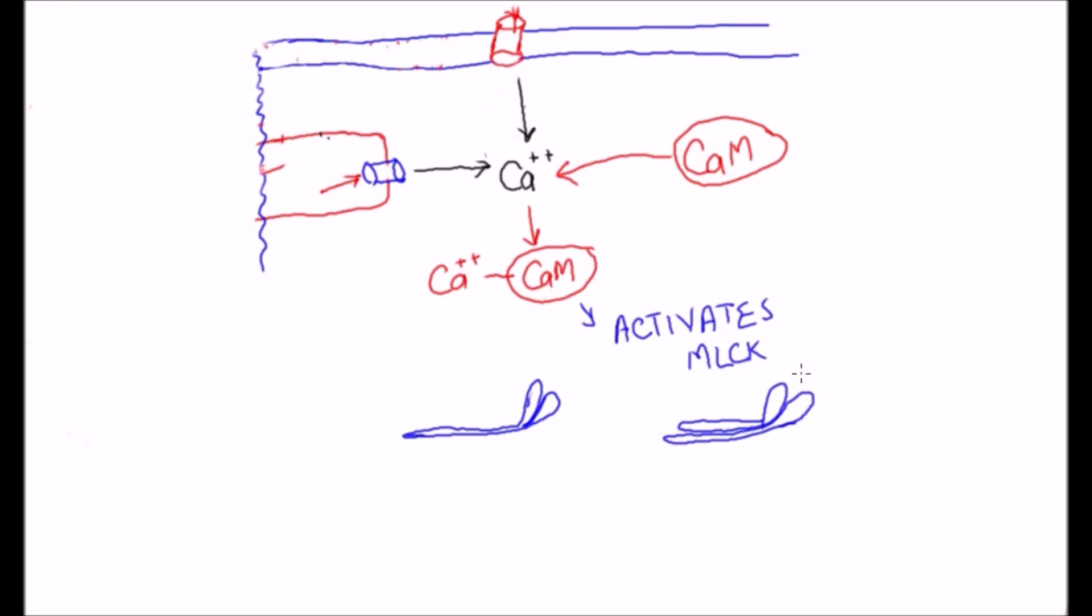One of the light chains of each myosin head, called the regulatory chain, becomes phosphorylated in response to the myosin kinase. When this chain is not phosphorylated, the attachment-detachment cycling of the myosin head with the actin filaments does not occur. However, when the regulatory chain is phosphorylated,